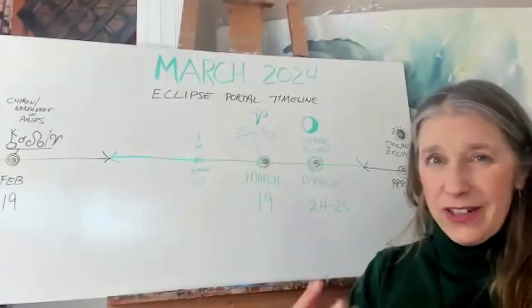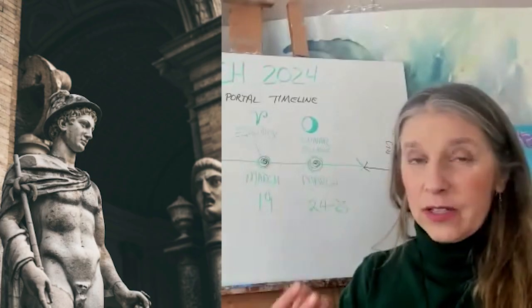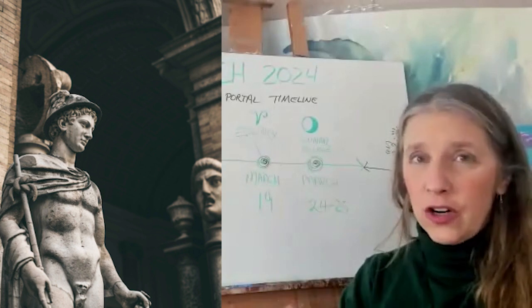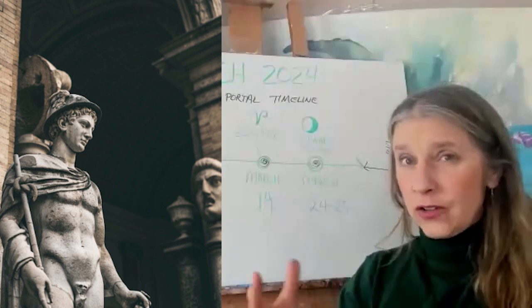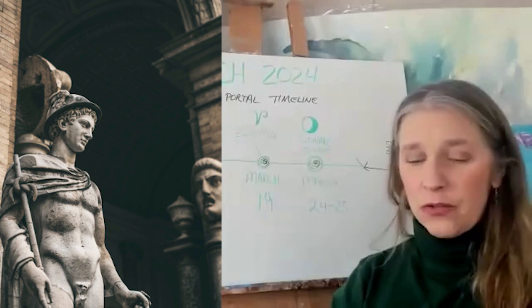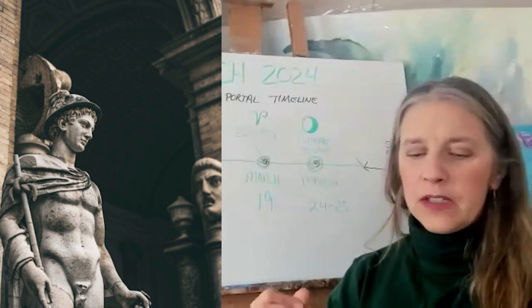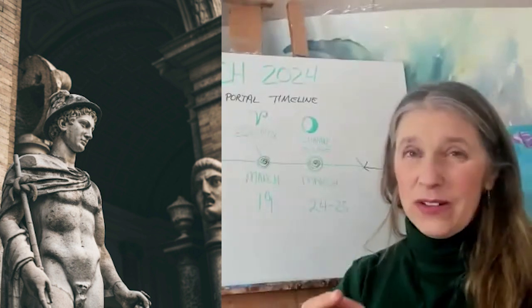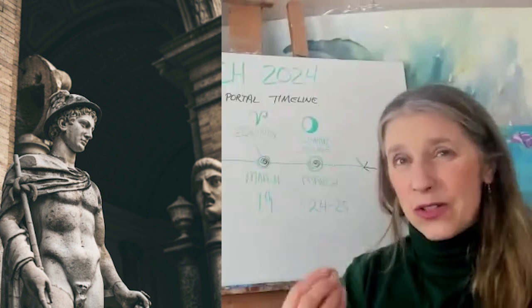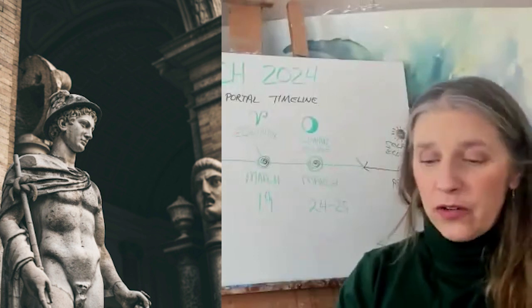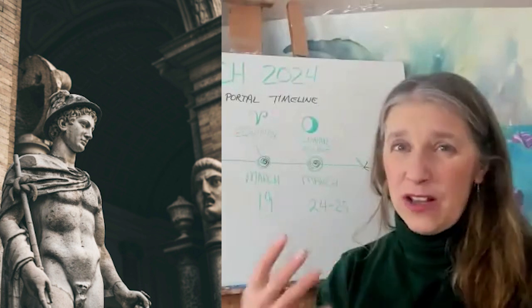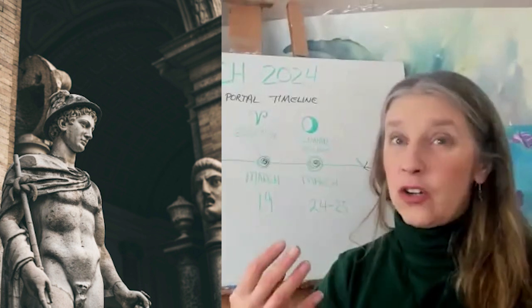It was a masculine figure guarding the entrance but it was there both to guard the doorway and to admit people through. When I asked who this was I was told it was Hermes or Mercury.